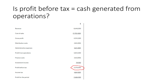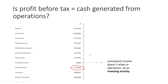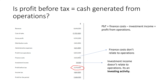Profit before tax for a company is £3.3 million — is that the same as cash generated from operations? No, because investment income is an investing movement, not operations, and finance costs aren't directly related to operations and may also be non-cash. So we have to adjust for them: add back finance costs and take away investment income to arrive at profit from operations.